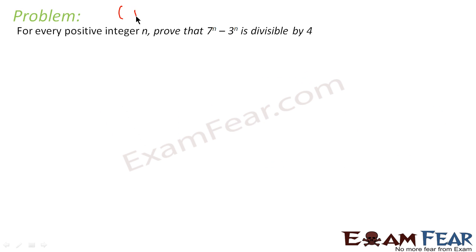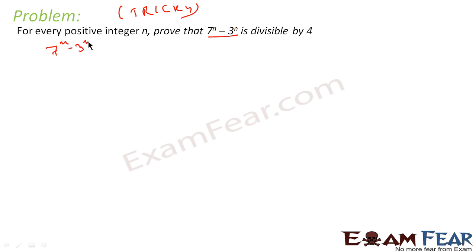Let's take this question — it's a little tricky. We have to prove that 7 to the power n minus 3 to the power n is divisible by 4. That means 7^n minus 3^n equals 4 times d, where d is some constant. We will now prove this for n equal to 1.